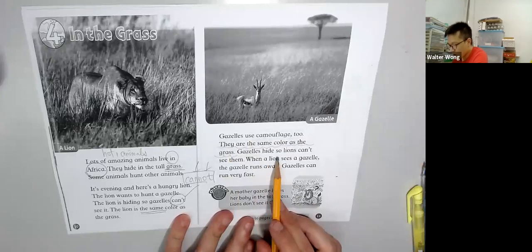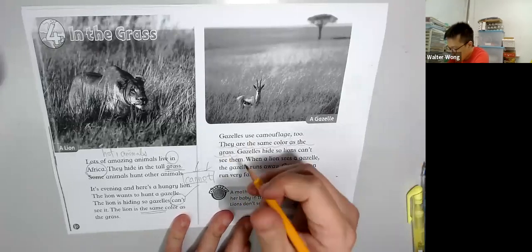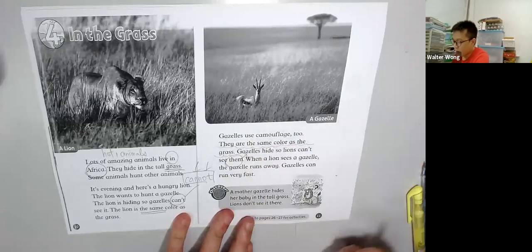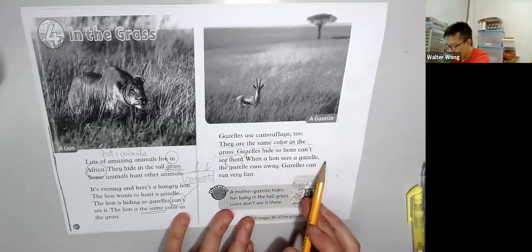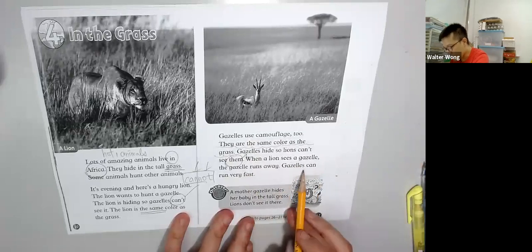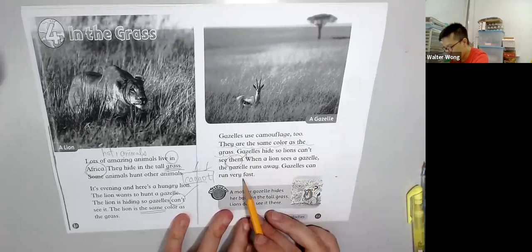Gazelles hide, so lions can't see them. This damp is called gazelles. When a lion sees a gazelle, the gazelle runs away. Gazelles can run very fast.